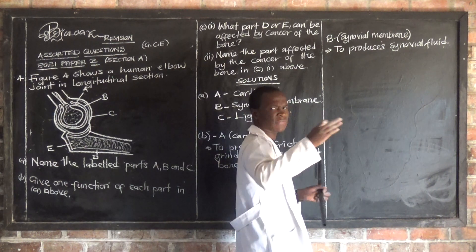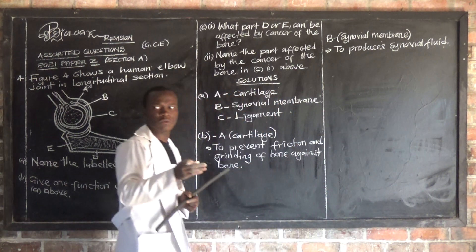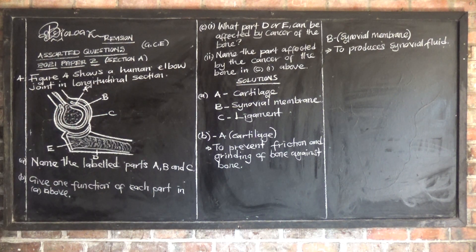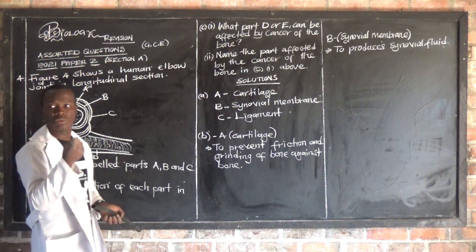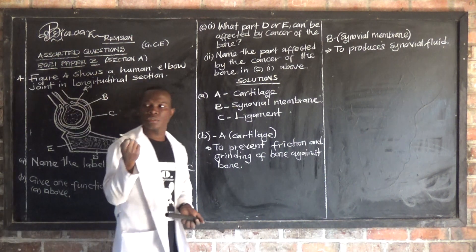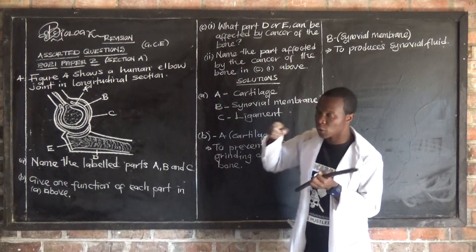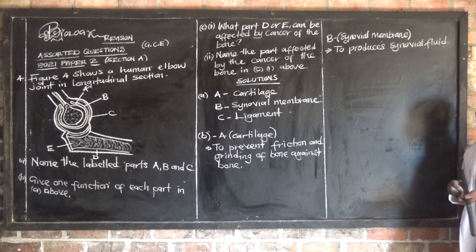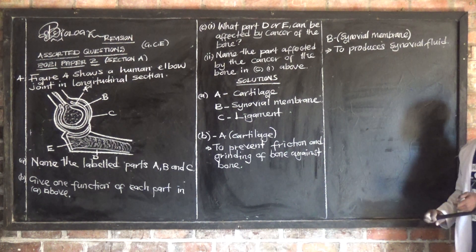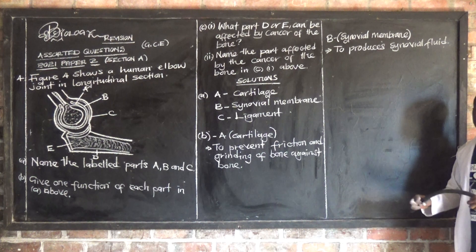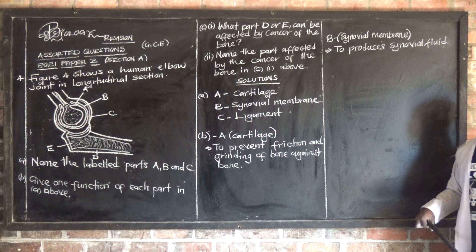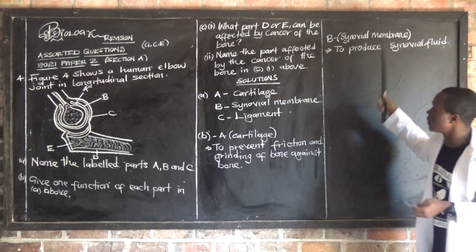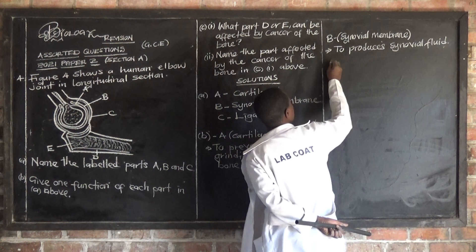The synovial fluid also helps in preventing friction and supplies nutrients to the joint. So the function of the synovial fluid is to prevent friction and supply nutrients to the joint. The synovial membrane produces this synovial fluid.